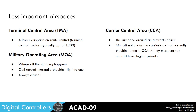We have the terminal control area or TMA, which is a lower enroute control airspace typically up to about flight level 200 or so. We then have the military operating area or MOA, where all of the shooting happens. Civil aircraft tend not to fly into one without explicit clearance and normally lots of paperwork. These can be thought of as being class Charlie, though they are a tactical airspace structure. Then we have the carrier control area or CCA, the airspace around an aircraft carrier. Aircraft not under the carrier's control would ideally not enter a CCA, and within it carrier aircraft will have higher priority.